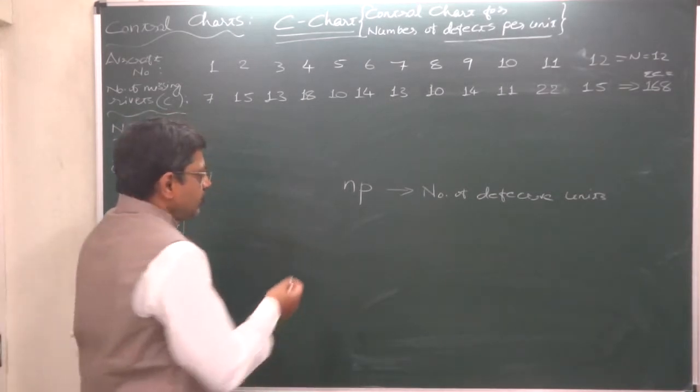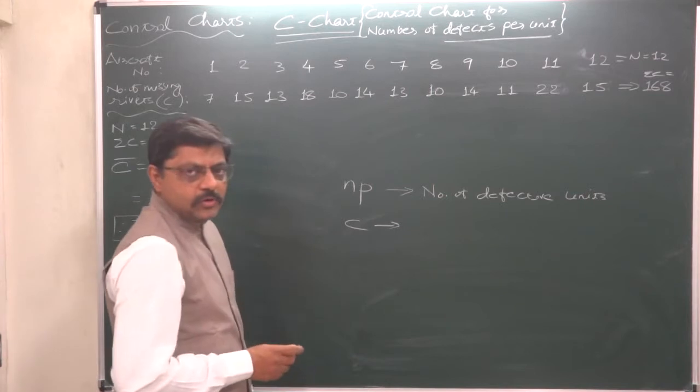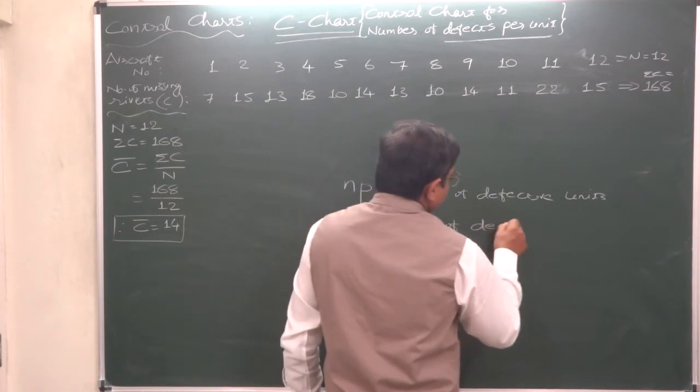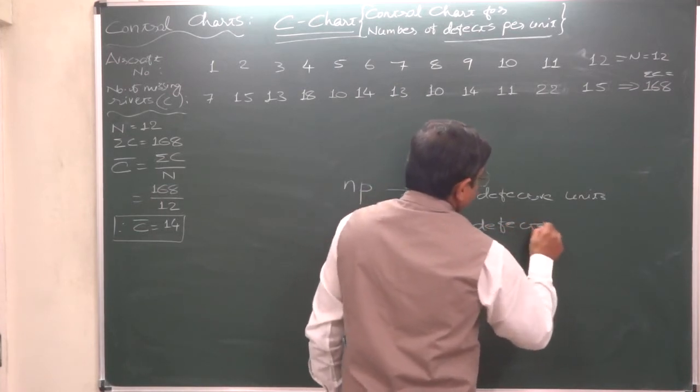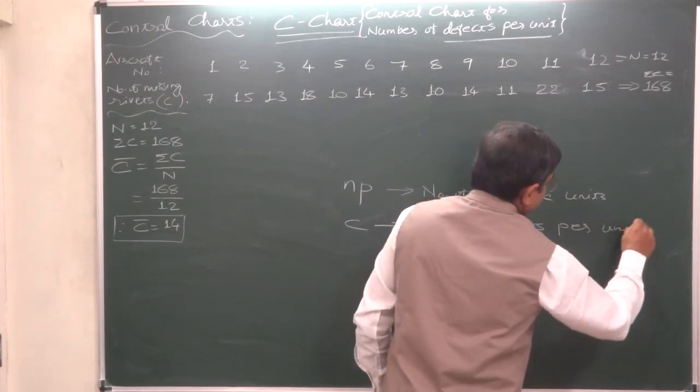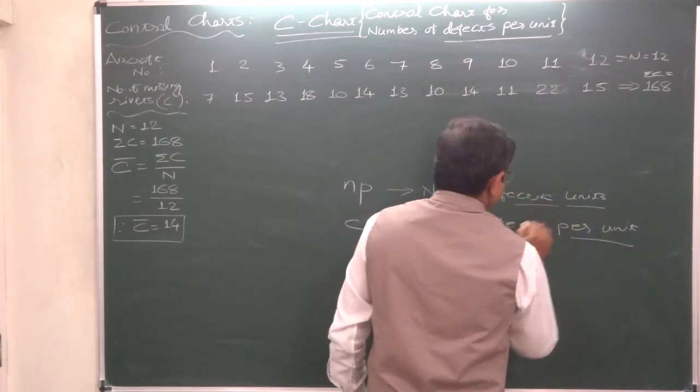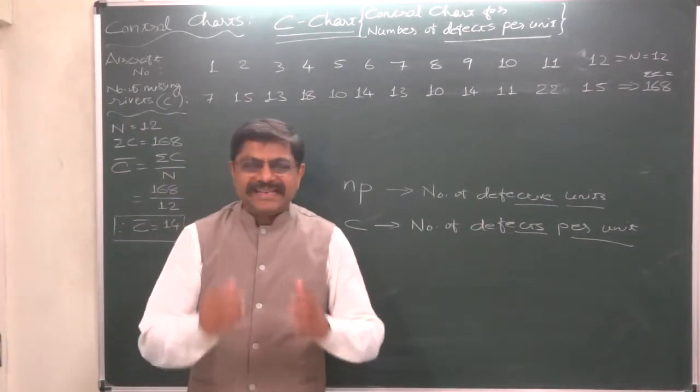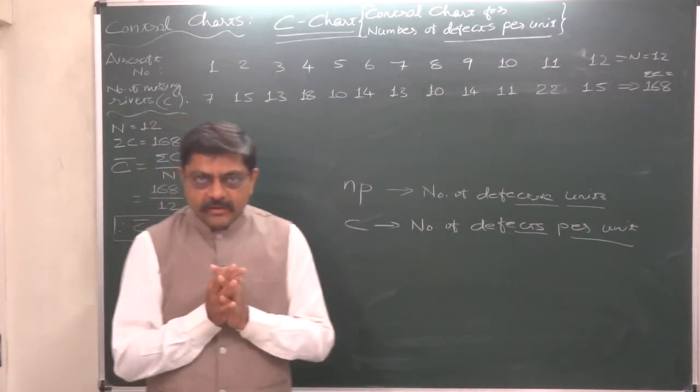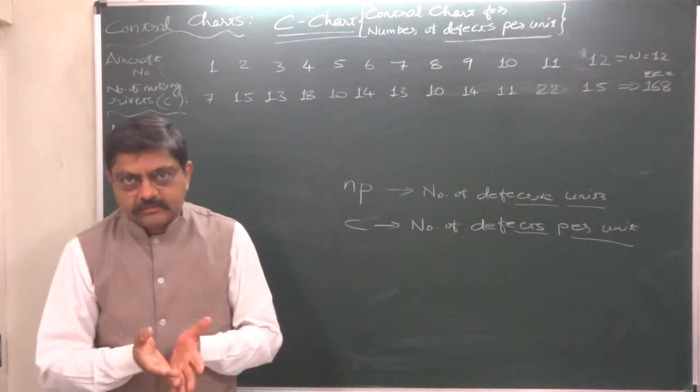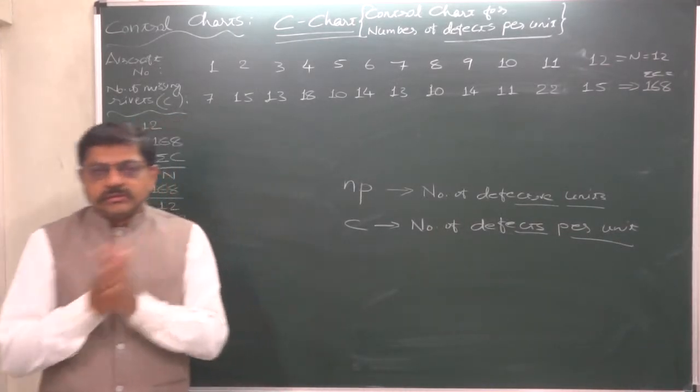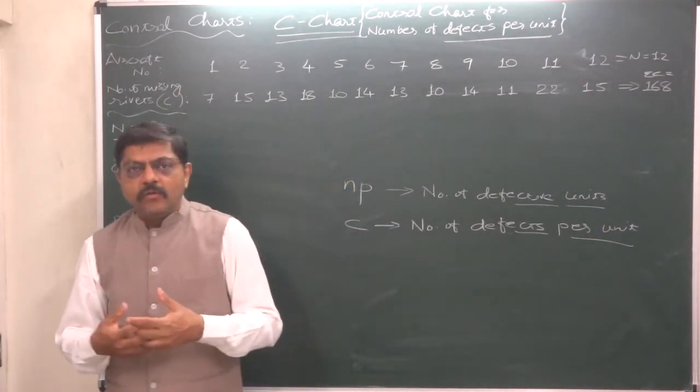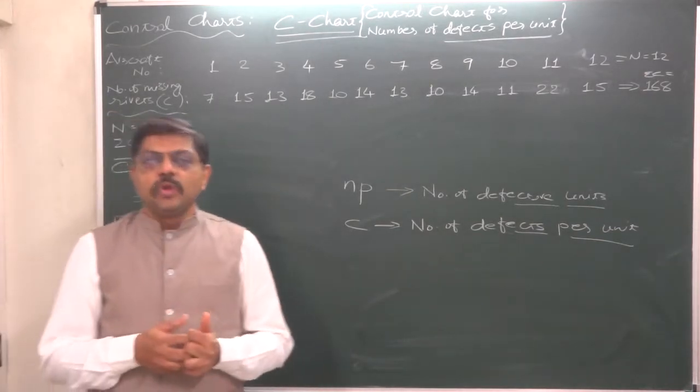Here in C chart, by the term or sign C, we mean number of defects per unit. This is the difference. Here in C chart we need to inspect each and every unit for possible number of defects. So here the kind of study is different, and obviously we can have a reasonably small sample.